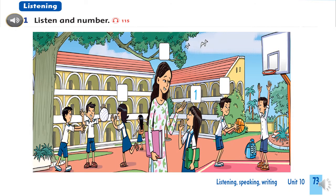Now everyone, let's open your student book on page 73. Let's begin with listening skill. Part 1: Listen and Number. First, you look at the picture and answer some questions. Are you ready? Yes. Let's go.